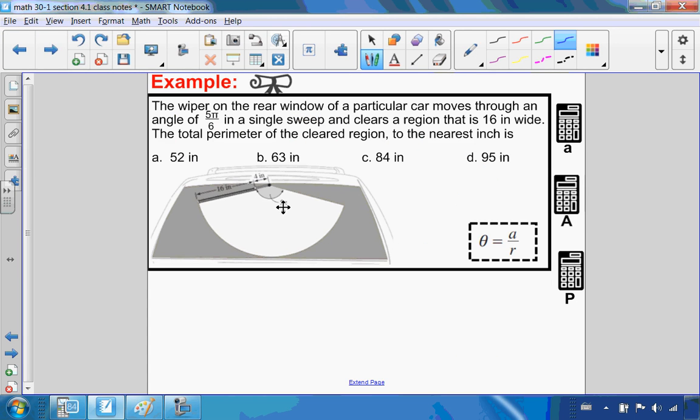Last example of this lesson, another diploma example. This is a great question. The wiper of a rear window of a particular car moves through an angle of 5π over 6. In a single sweep, it clears a region that is 16 inches wide. I want to know the total perimeter of the cleared region. So this is the region that is cleared.